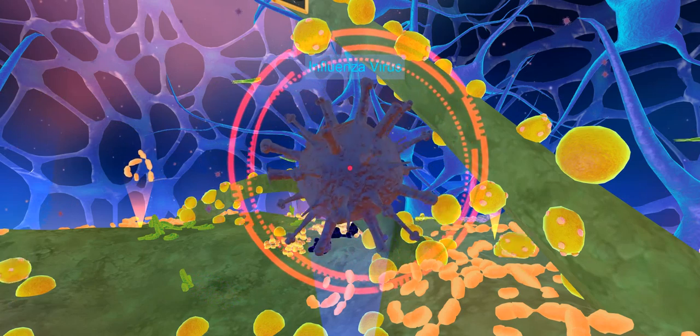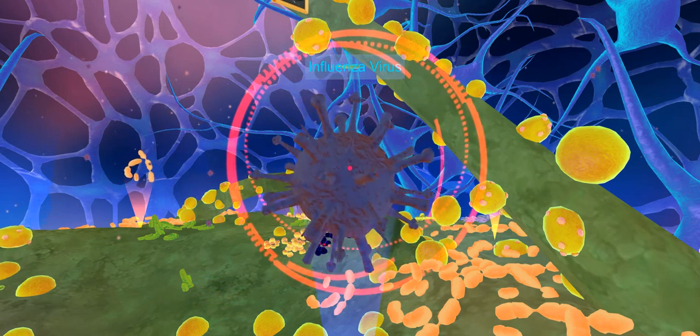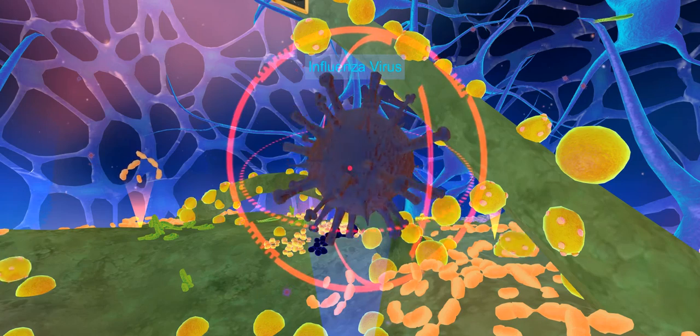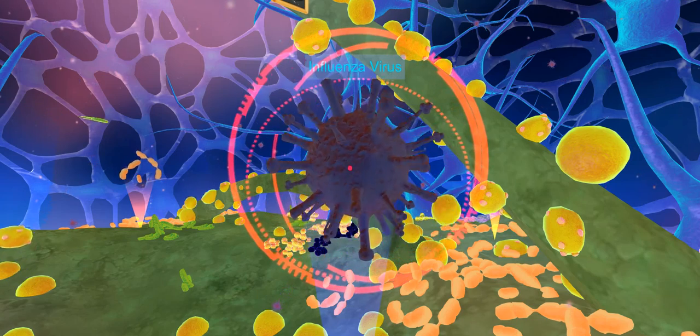Flu virus morphology is spherical, with particles between 80 to 120 nanometers in diameter.